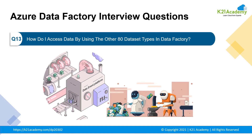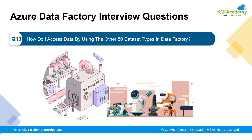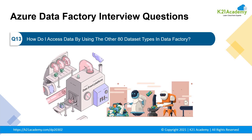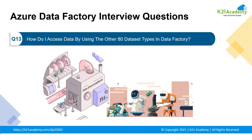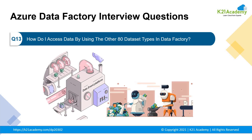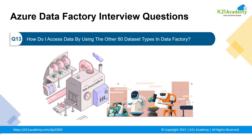Moving to our next question: how do we access data using other dataset types in Data Factory? The mapping data flow feature currently allows Azure SQL Database, Azure SQL Data Warehouse, delimited text files from Azure Blob storage or Azure Data Lake Storage Generation 2, and Parquet files from Blob storage or Data Lake Storage Generation 2 natively for source and sink. You can use copy activity to stage data from any of the other connectors, and then execute a data flow activity to transform data after it has been staged — for example, the pipeline will first copy into blob storage, and then a data flow activity will use a dataset in the source to transform that data.